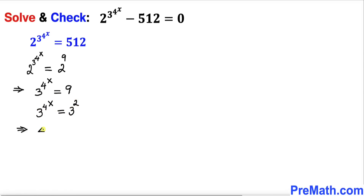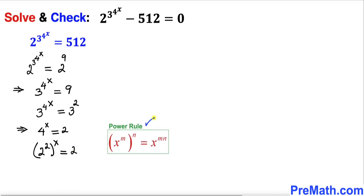So we can write 4 power x equals to 2. Now let's focus on this base 4 — 4 can be written as 2 power 2. So we can write 2 power 2, and then power x, equals to 2 on the right hand side. According to the power rule, we can multiply out these two nested exponents, so we get 2 power 2x equals to 2.